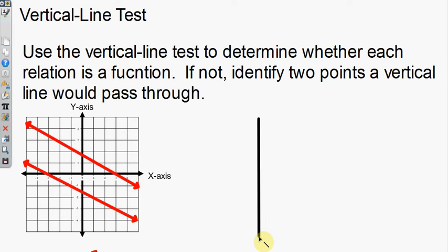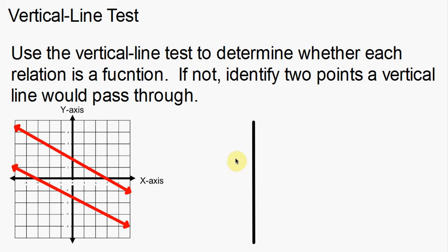This is much easier to do in real life rather than on a computer. I usually just grab a ruler or use your pencil, whatever you have at the time. We're using the vertical line test to determine whether each relation is a function. Notice here we've got a graph — you might look at this and think those are two separate lines, but notice the color of them: this one is red, and this one here is red. This is actually one function. When authors create problems like this, they usually use the same color to represent a single function.